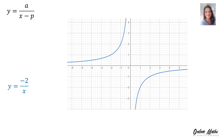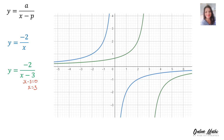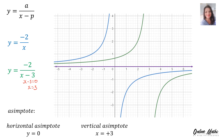Here is another example. Given y equals minus 2 over x, if the new equation is y equals minus 2 over x minus 3, you set x minus 3 equal to 0 and find x equals 3. The horizontal asymptote remains the x-axis — the line y equals 0 — but the vertical asymptote is now the line x equals 3. This confirms that x minus p under the line results in a left or right shift of your graph.